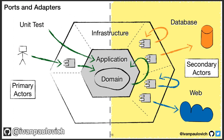Let me share a small slide. This is a hexagonal architecture style — on the left side you have the primary actors, with unit tests and another application; on the right side the actors that are affected by the application, such as a database or a web service. So primary and secondary actors, and in the middle the application which exposes interfaces and the adapters that implement them. Ports are interfaces and adapters are implementations to external actors.